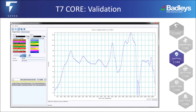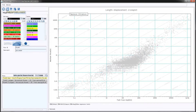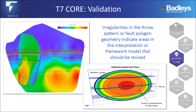Using the tools in T7Core validation, anyone can quickly become an expert structural geologist. Use our simple fault analysis and fault statistic tools to create robust, defensible models on which to build your geological model. Model and display fault throw on fault surfaces in 3D for all horizons with model polygons. Irregularities in the throw pattern or fault polygon geometry indicate areas in the interpretation or framework model that should be revised.